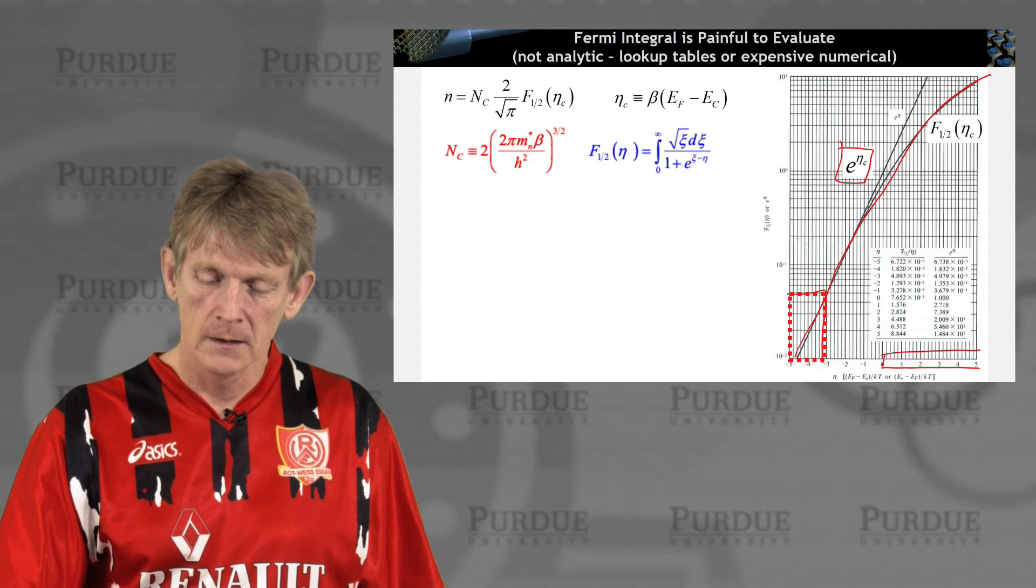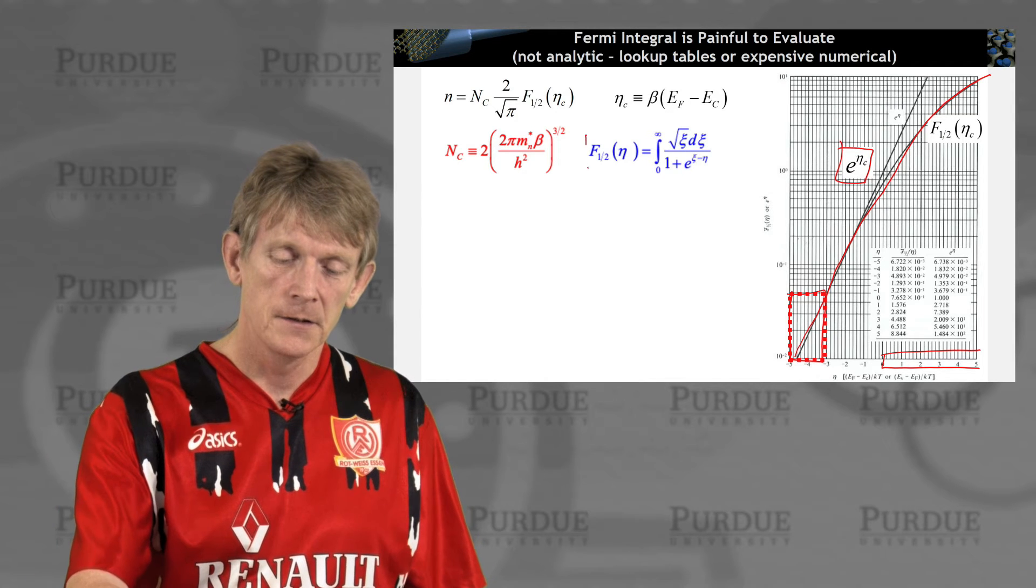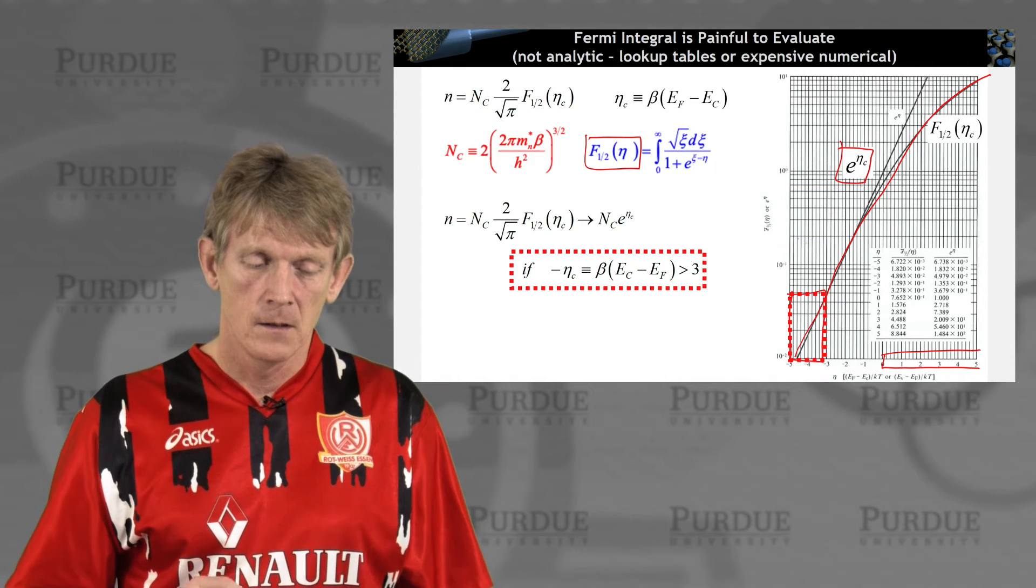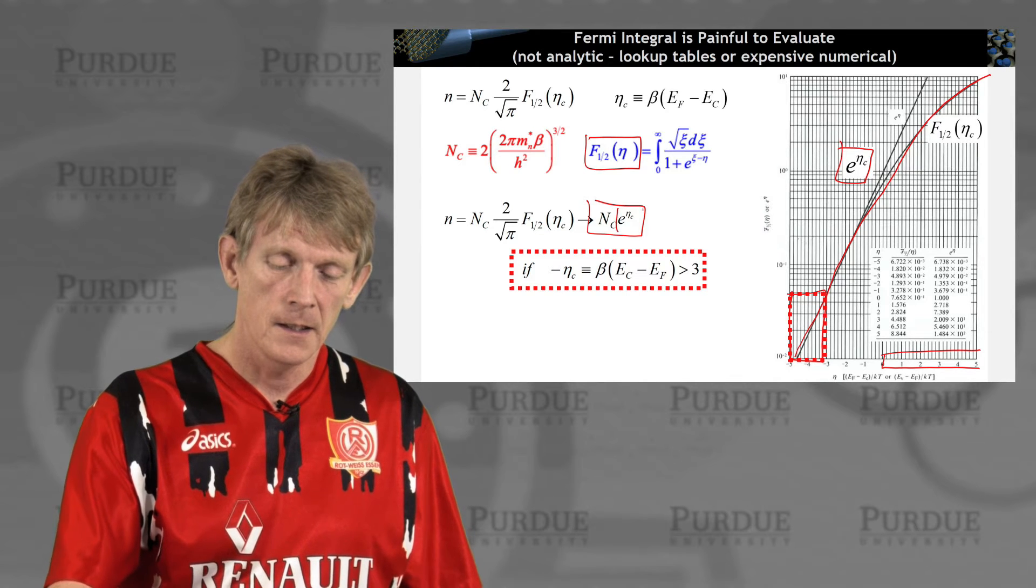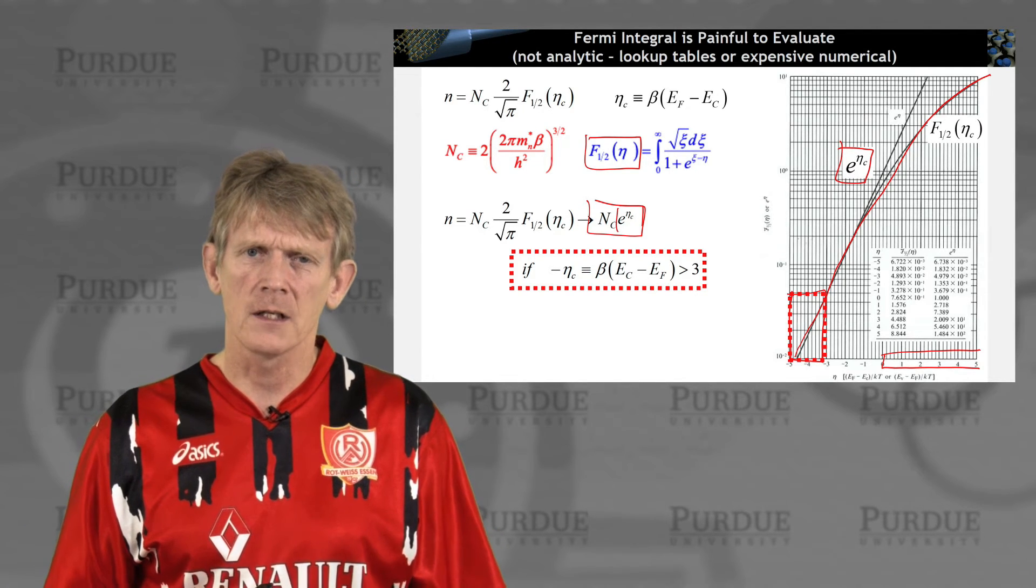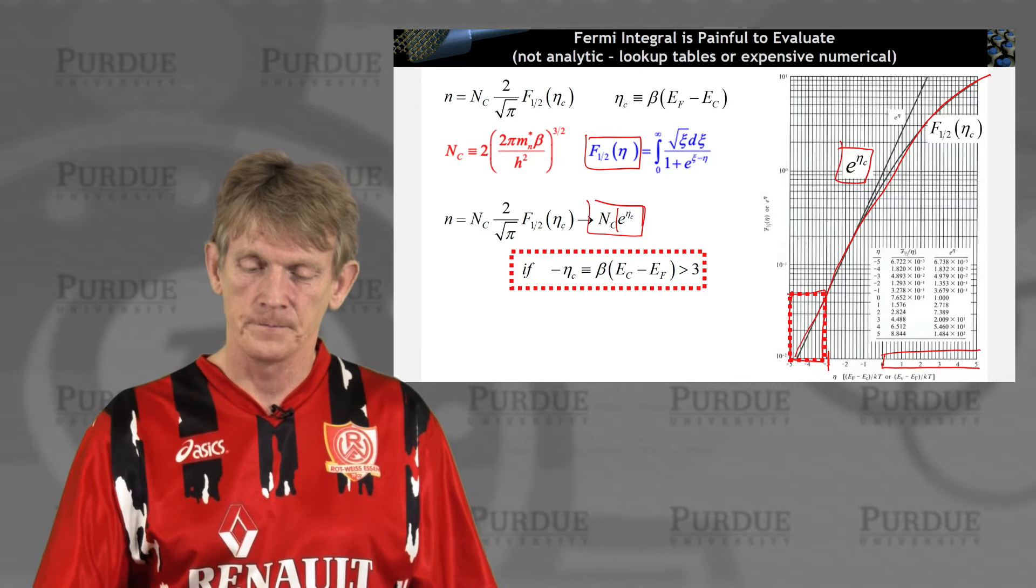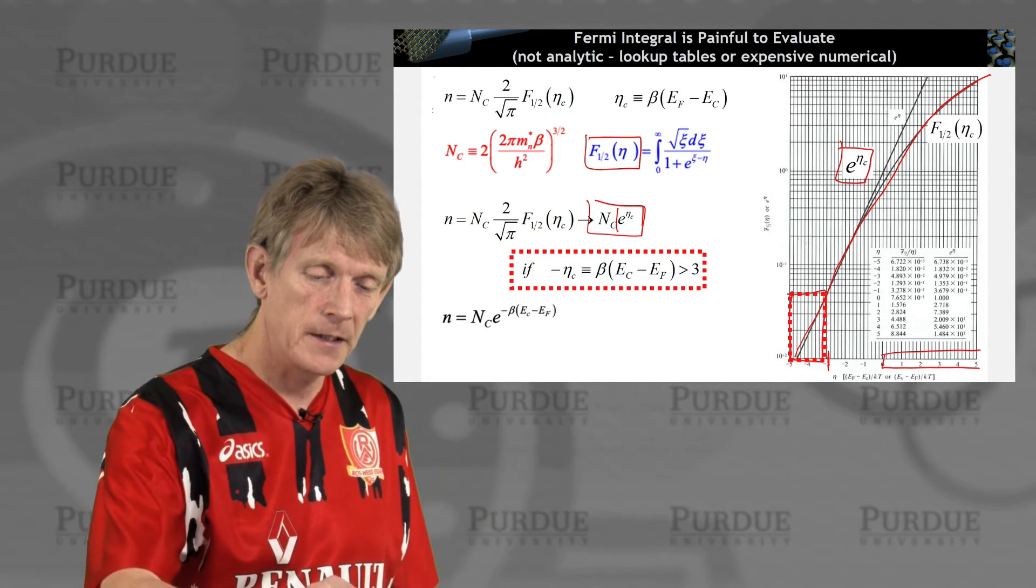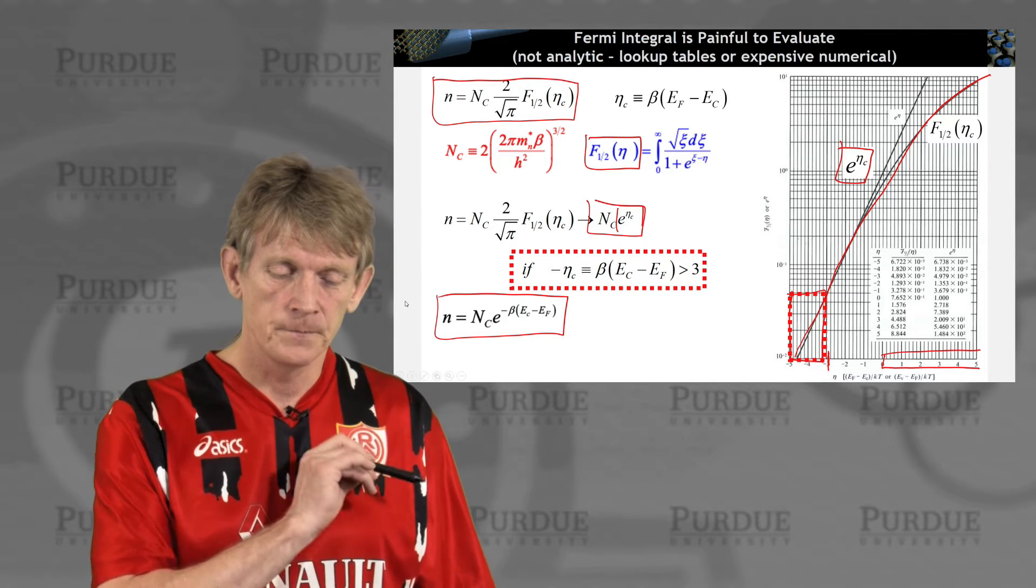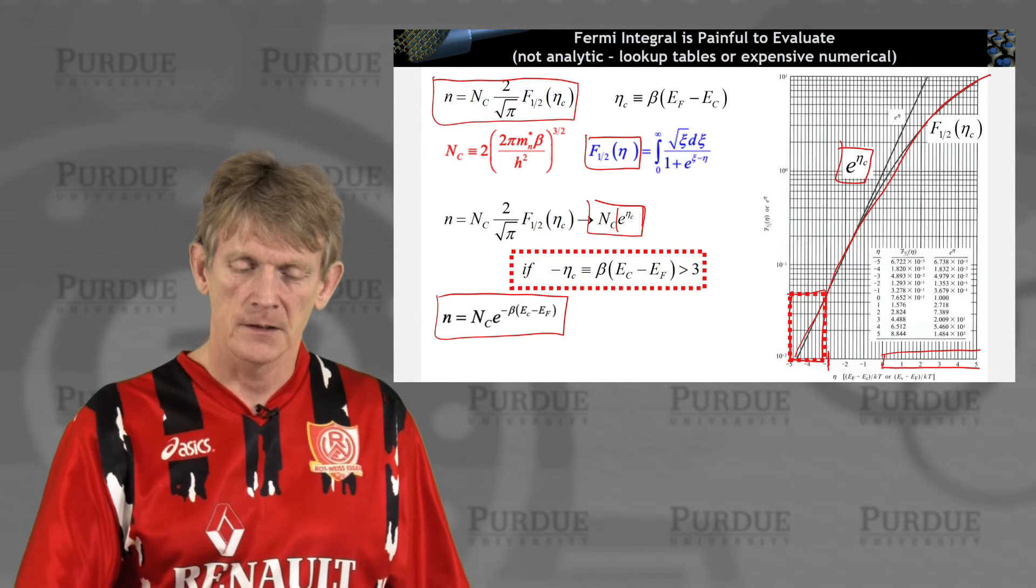Now a very good approximation to this function is e to the eta. And that will particularly work well for any eta that is less than minus 3. So you can replace this function here with nc times e to the eta. So that is a good approximation. As you can see on these curves, they virtually lie on top of each other for small negative values of eta here. So you can replace this complicated beast here, that includes a tabulated function, with an expression like this, that is just a simple complex exponential.